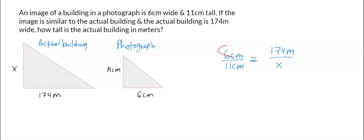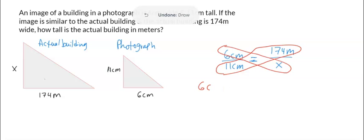I'm going to do 6 centimeters times X and 11 centimeters times 174 meters. So it would look like 6 centimeters X. Actually, let me just do the numbers and keep the centimeters here.